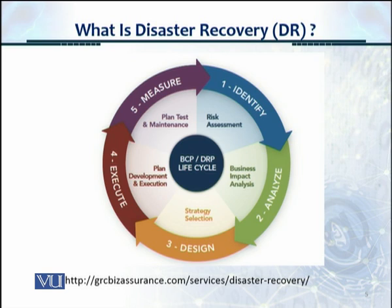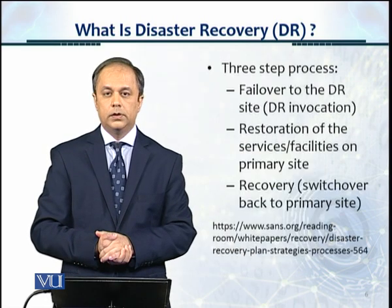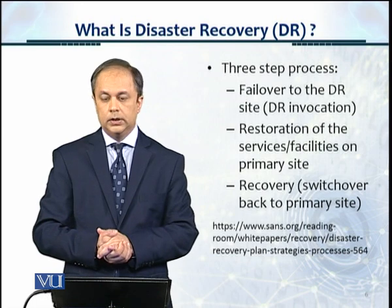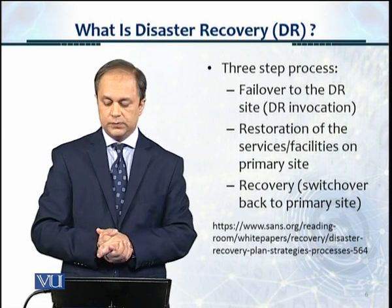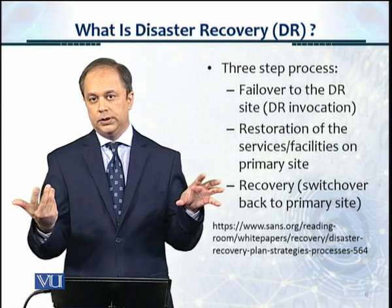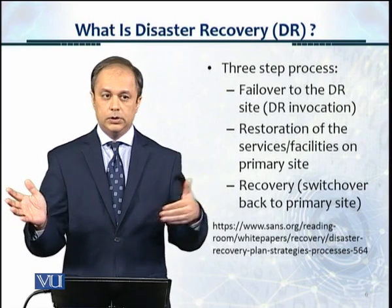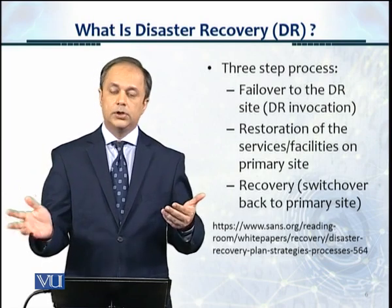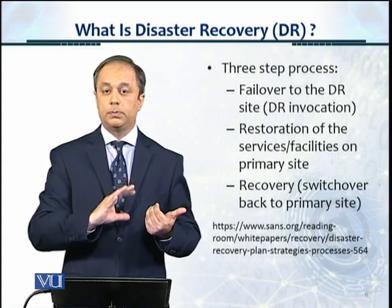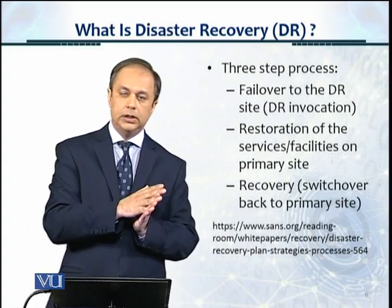There are three steps in disaster recovery. The first is invoking the failover to the DR site. The second is restoration of services and facilities at the primary site — while services are running from the alternate site, you recover the primary site. The third step is recovering back to the primary site, where all IT processing facilities are shifted back.